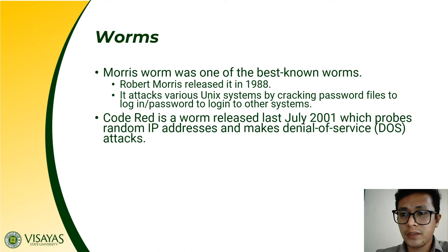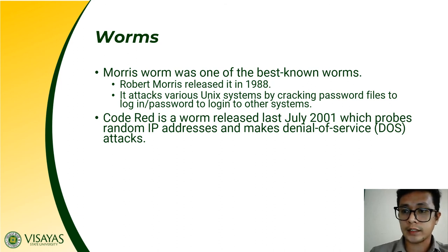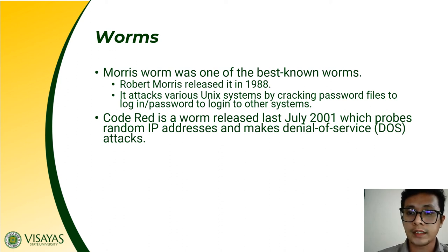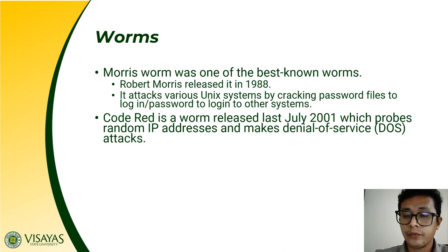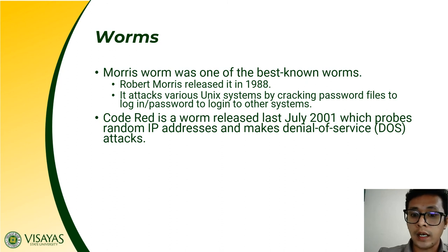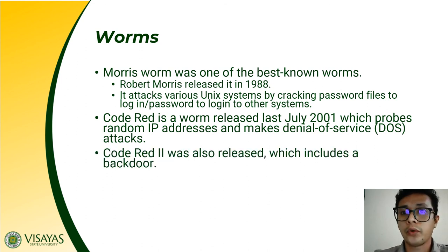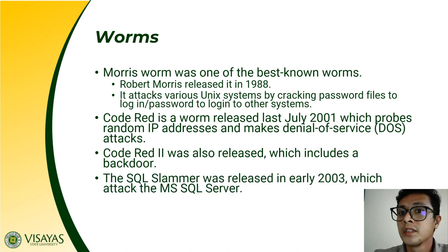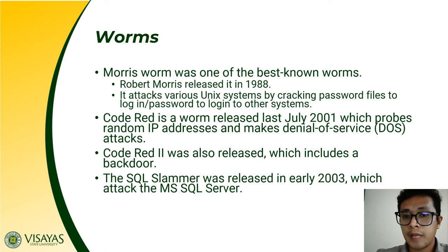Code Red probes random IP addresses and makes denial of service attacks — a server is flooded with invalid requests with no return address, so requests cannot be returned to their destination, consuming all network resources, and the server can no longer cater to valid requests. Code Red 2 was also released, which includes a backdoor. Another worm was released in the year 2003, the SQL Slammer, which attacked the MS SQL Server — a dedicated database server for computers in a network.